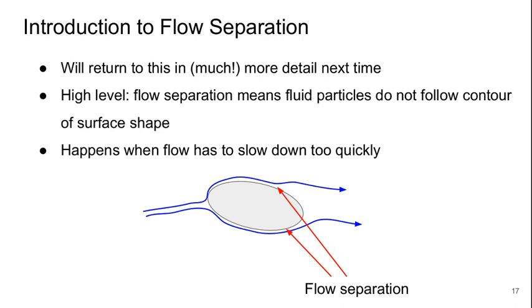So when we have flow separation, it means that the fluid particles are not following the contour of the surface of our object. So here we have flow coming out, and here's some streamlines coming around this object.